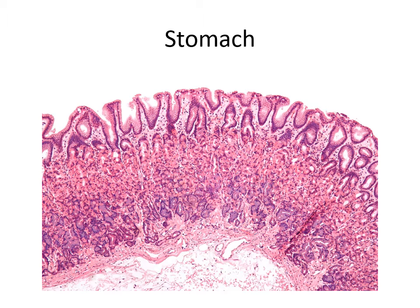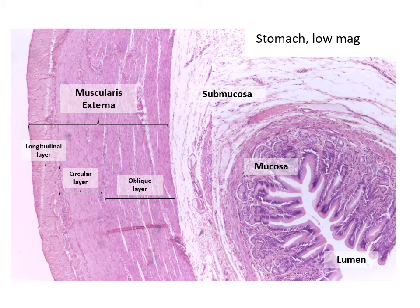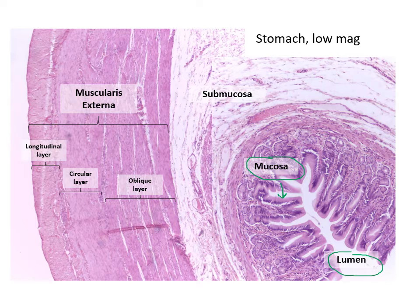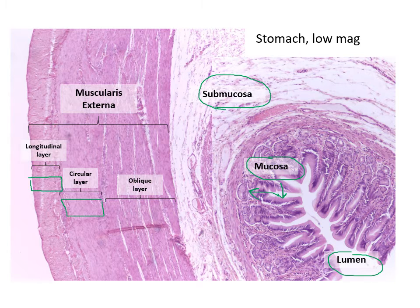Here's another image of the stomach — you can see down in here are these gastric pits. Here's a low magnification view so you can see all of the layers. We've got our lumen here in the middle. Here is our mucosa — our simple columnar epithelium diving down into those gastric pits. Submucosa is the connective tissue deep to the mucosa, and then our muscularis externa. In the stomach we have three layers of smooth muscle: the outer longitudinal layer, the middle circular layer, and then the oblique layer which runs kind of diagonal.